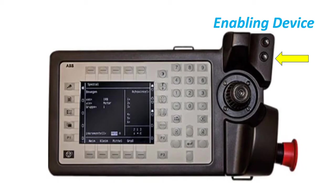Enabling Device for Safe Operation: when the enabling device is released or pushed all the way in, the Guard Stop will be activated, meaning the motor is off. To activate the enabling device, press it halfway and the motor will turn on.